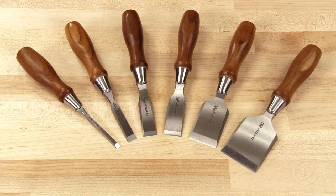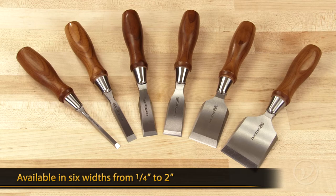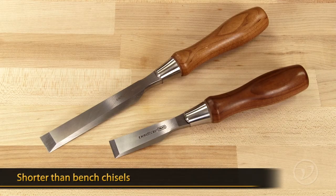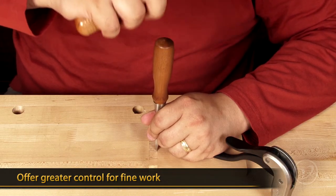The new Veritas PMV 11 butt chisels come in six sizes from a quarter of an inch to a full two inches in width. Butt chisels are shorter than bench chisels and can offer greater control when doing fine work like dovetailing.